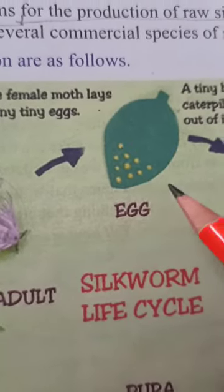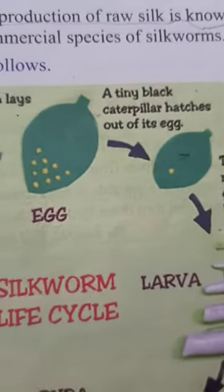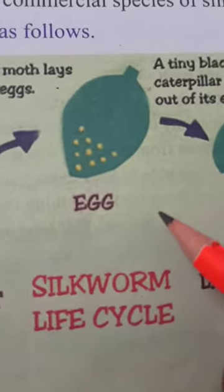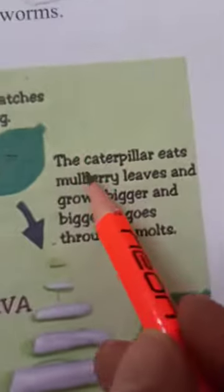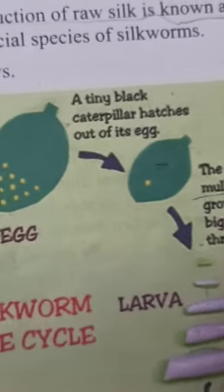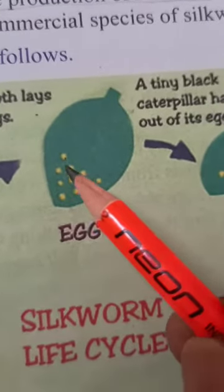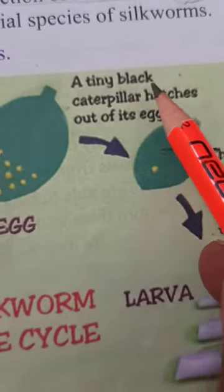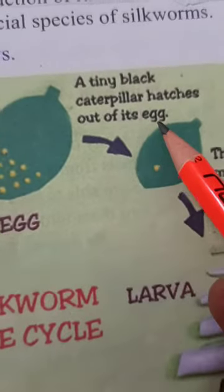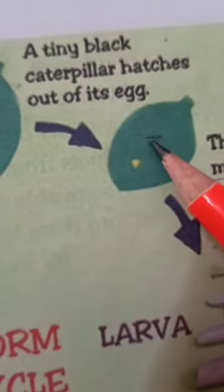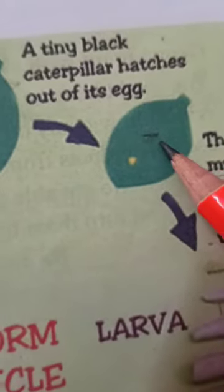The female lays eggs on the leaves of mulberry trees. Silkworms live on a special kind of tree — the mulberry tree. When the female lays eggs on mulberry leaves, a tiny black caterpillar hatches out of each egg.